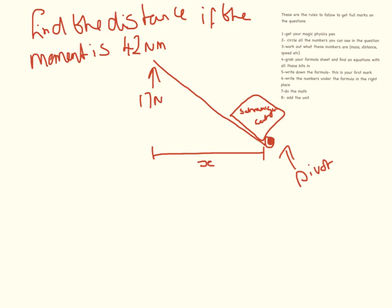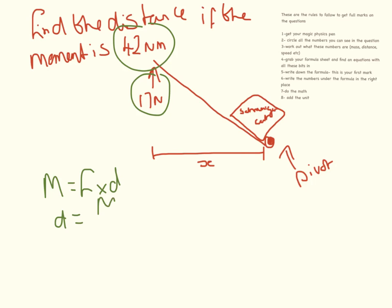This is a higher tier question because we need to do some rearranging. The numbers we have are 17 Newtons and a moment of 42 Newton meters. Moment equals force times distance, so distance equals moment divided by force. Our moment is 42 and our force is 17, which gives 2.5 meters.